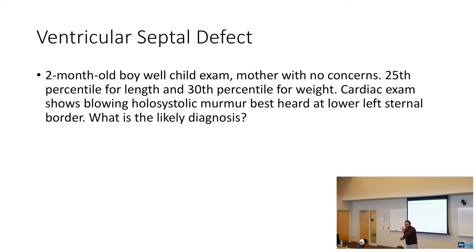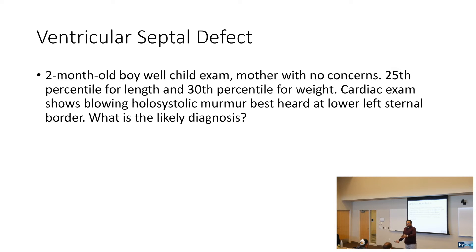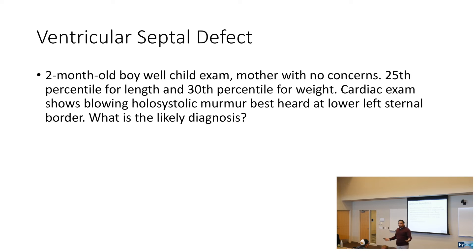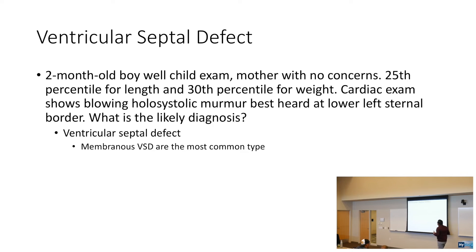When you see holosystolic murmur at the left lower sternal border, it's all about real estate with murmurs — location first. Nothing pulmonic is at the left lower sternal border. Then characterize systolic versus diastolic. This is a ventricular septal defect — a blowing holosystolic murmur. VSDs are usually left to right unless you have Eisenmenger's syndrome, where they switch to right to left. Membranous VSDs are the most common type.